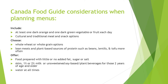Page ten in the practical guide reviews what should be considered when planning your menu choices. Try to include at least one dark orange and one dark green vegetable or fruit each day. Include cultural and traditional meal and snack options. Choose whole wheat or whole grain options, and lean meats and plant-based sources of protein such as beans, lentils, and tofu more often. Offer food prepared with little or no added fat, sugar, and salt. Serve skim, 1%, or 2% milk or unsweetened soy-based plant beverages for those two years of age and older, and make sure there's water available at all times.